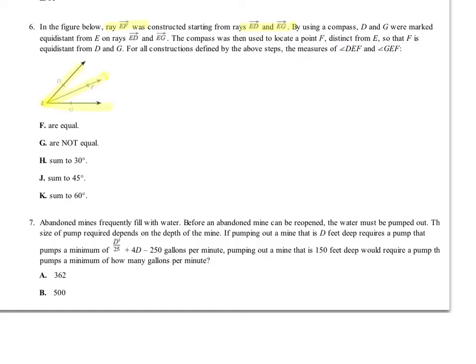Okay. D and G. Okay, we got D and G are marked equidistant from E. That means this and that. D and G are the same distance from point E. And E and D are on the yellow lines already marked. ED and EG. Okay, the compass was, let's see then, the compass was then used to locate point F. That's point F. That one's out there.